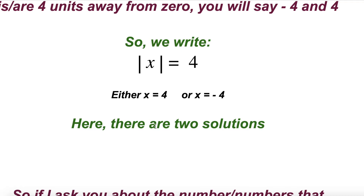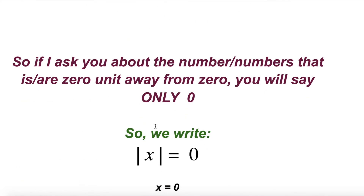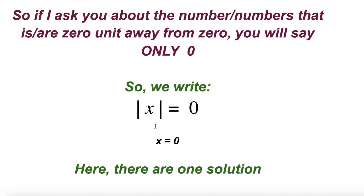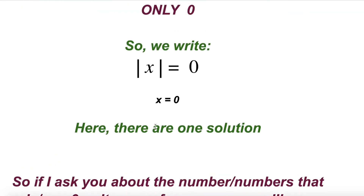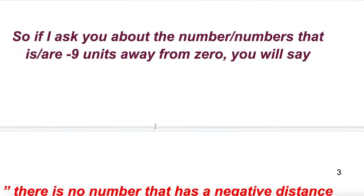When the number after the equals sign is positive, you will definitely have two solutions — either the expression inside the absolute value was positive or it was negative. If the absolute value of x equals 0, there is only one answer: x equals 0. We don't have a positive zero and a negative zero, so there is only one solution in this case.